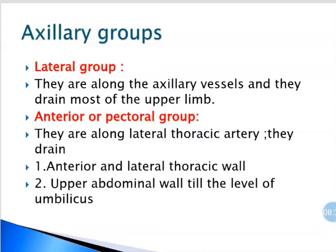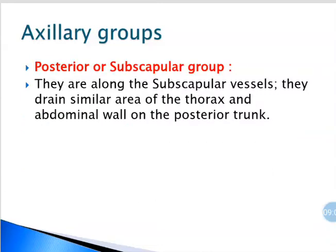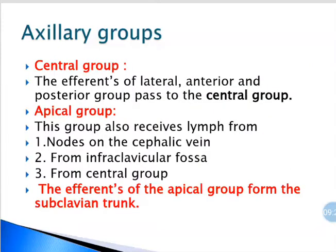The second group is the anterior group, also called the pectoral group because it is related to pectoralis major. They are located along the lateral thoracic artery and drain the anterior and lateral thoracic wall and the abdominal wall. The third group is the posterior or subscapular group, located along the subscapular vessels. They drain a similar area of the thoracic and abdominal wall but on the posterior trunk. The fourth group is the central group, which receives efferents from the lateral, anterior and posterior groups.